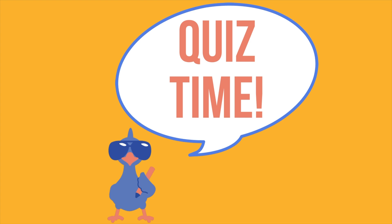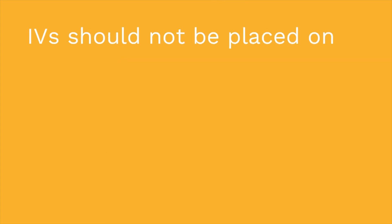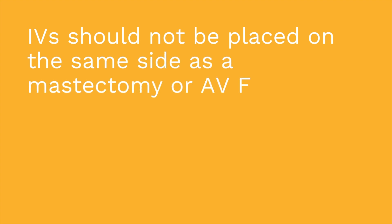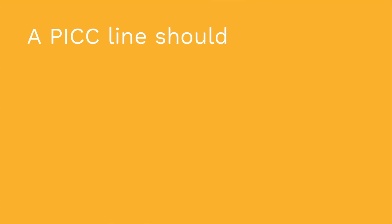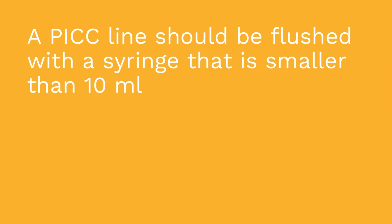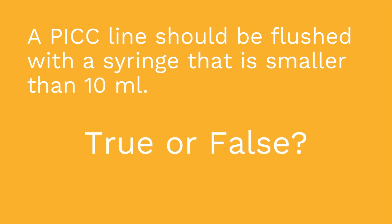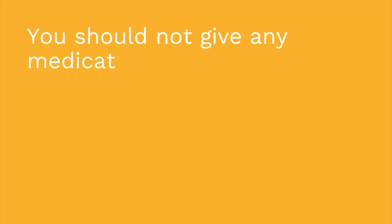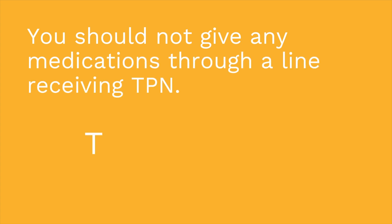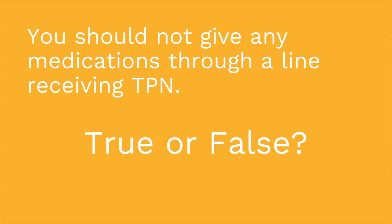It's quiz time — three true or false questions. Question one: IVs should not be placed on the same side as a mastectomy or AV fistula. True or false? The answer is true. Question two: A PICC line should be flushed with a syringe smaller than 10 milliliters. True or false? The answer is false — we want to use a 10-milliliter or larger syringe. Question three: You should not give any medications through a line receiving TPN. True or false? The answer is true.